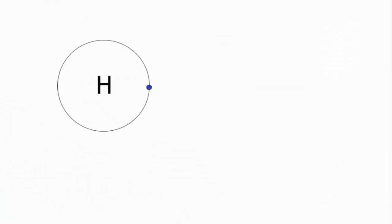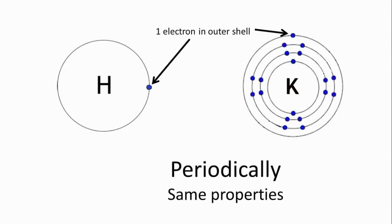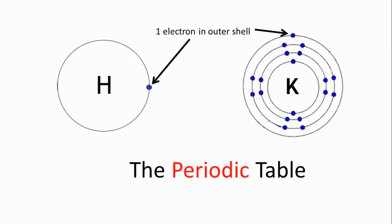As you move from the light elements to the heavy elements, you keep periodically coming across the same properties, which is why it's called the periodic table. The recurring properties are organized so that you can easily see similarities between elements.